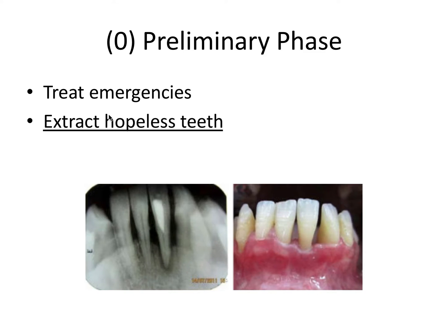Hopeless is an actual official category of tooth prognosis that we'll cover in depth in the next video. One of the determining factors of a hopeless prognosis tooth is having bone loss that involves the apex of the tooth, where there is hardly any periodontal attachment left and no hope for the periodontal apparatus to be restored. In most scenarios, this would be considered a hopeless tooth and best extracted. How I remember this: pre-liminary phase has the E for emergencies and E for extraction of hopeless teeth.